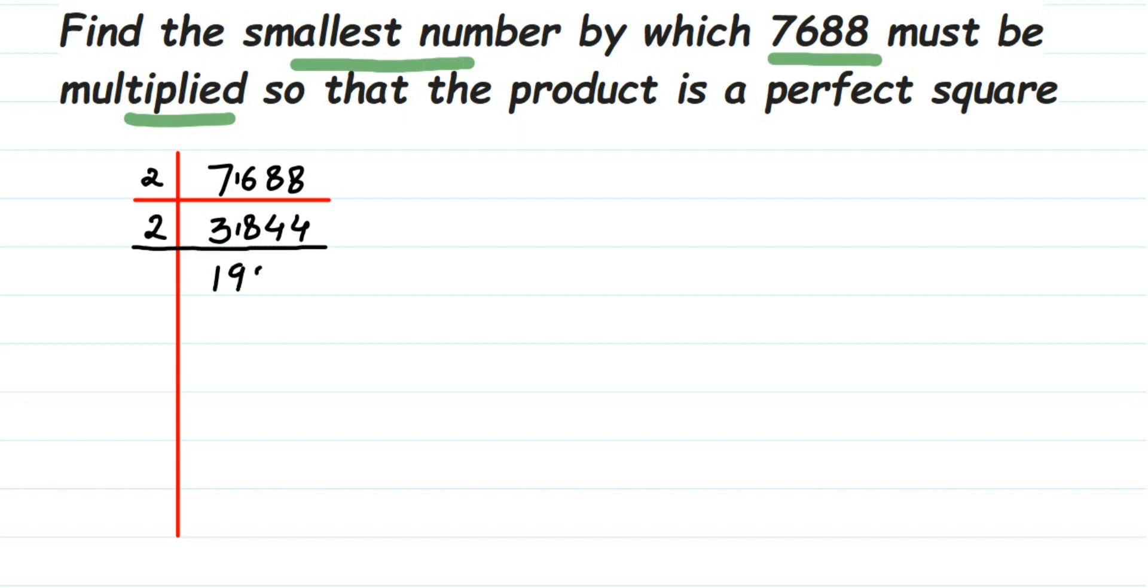This is an even number, so I'm taking two. Two ones are two, one is the remainder making 18. Two nines are 18, two twos are four. Again, two nines are 18, one is the remainder making 12. Two sixes are 12, two ones are two.